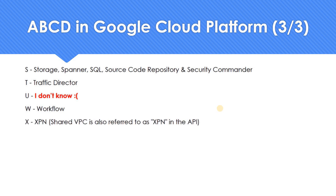X — even in childhood it was very difficult to get a word. The only word I could remember was Christmas, and that itself was confusing — it starts with C but is written as Xmas. The same applies here. Shared VPC is also called XPN — Extended Private Network, as I understand it. Even in the APIs, when you give an IAM role it would usually be XPN dot something. So X for XPN, just like how we have Christmas or Xmas.